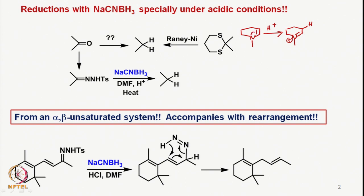You have the lone pair of electrons pushing this double bond, and protonation occurs. Under these conditions, the reduction allows reduction of the ammonium ion, and sodium cyanoborohydride delivers the hydride at this particular position. We saw many different types of reductions using sodium cyanoborohydride under acidic conditions.